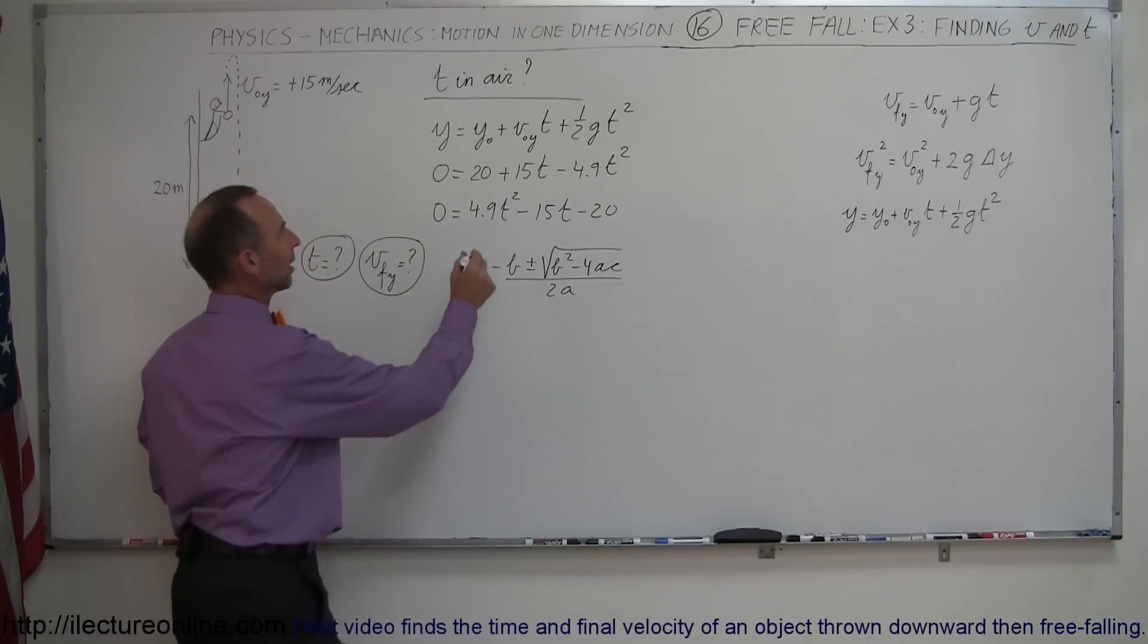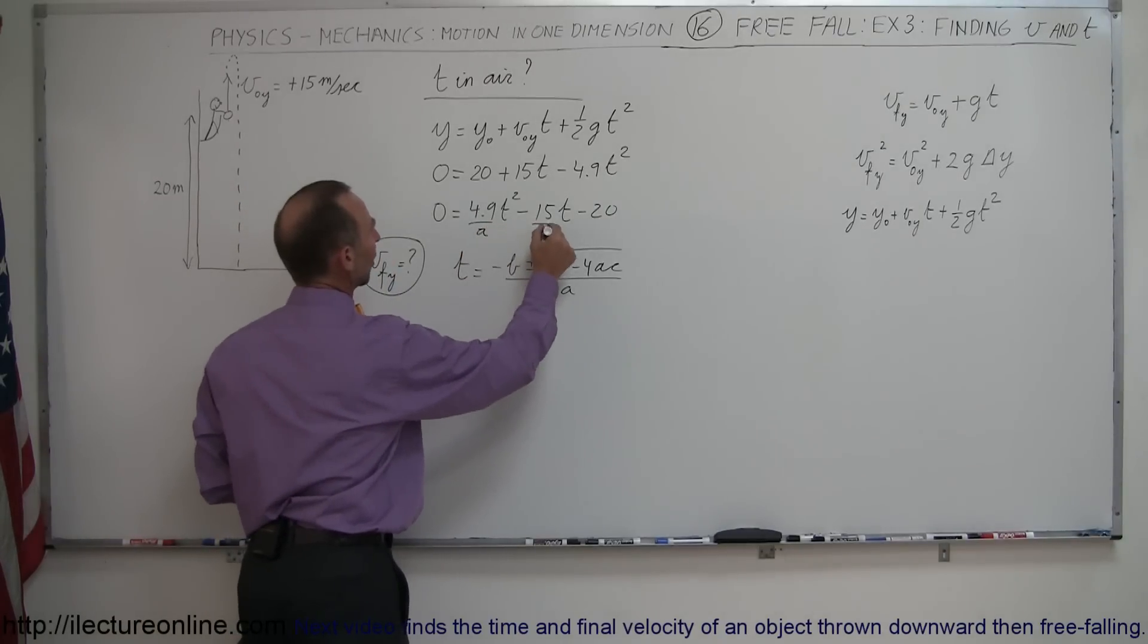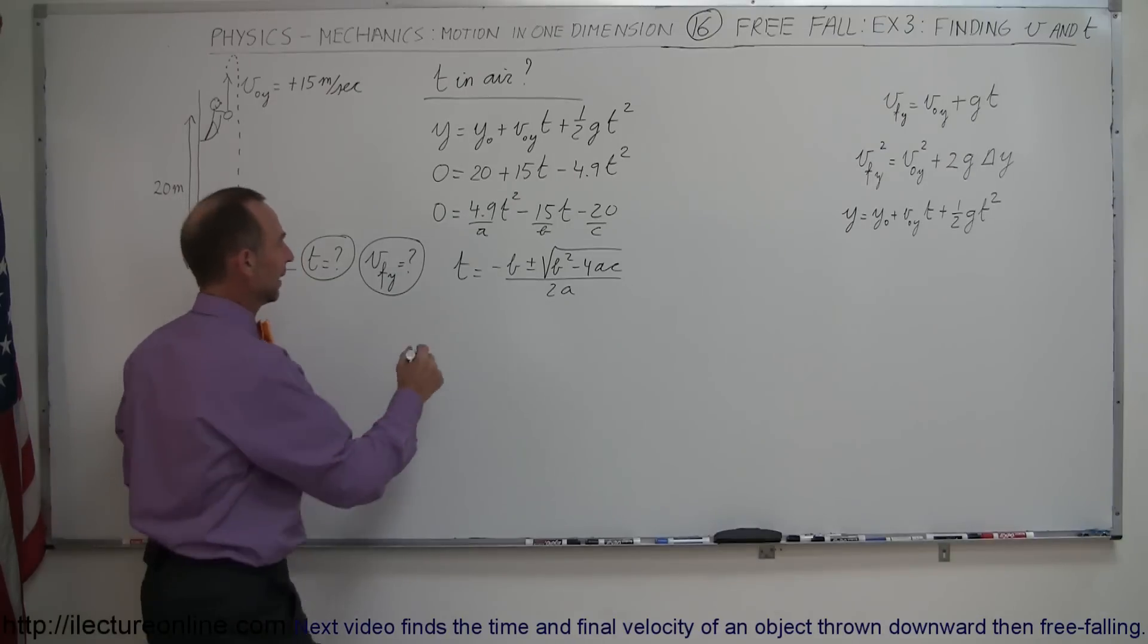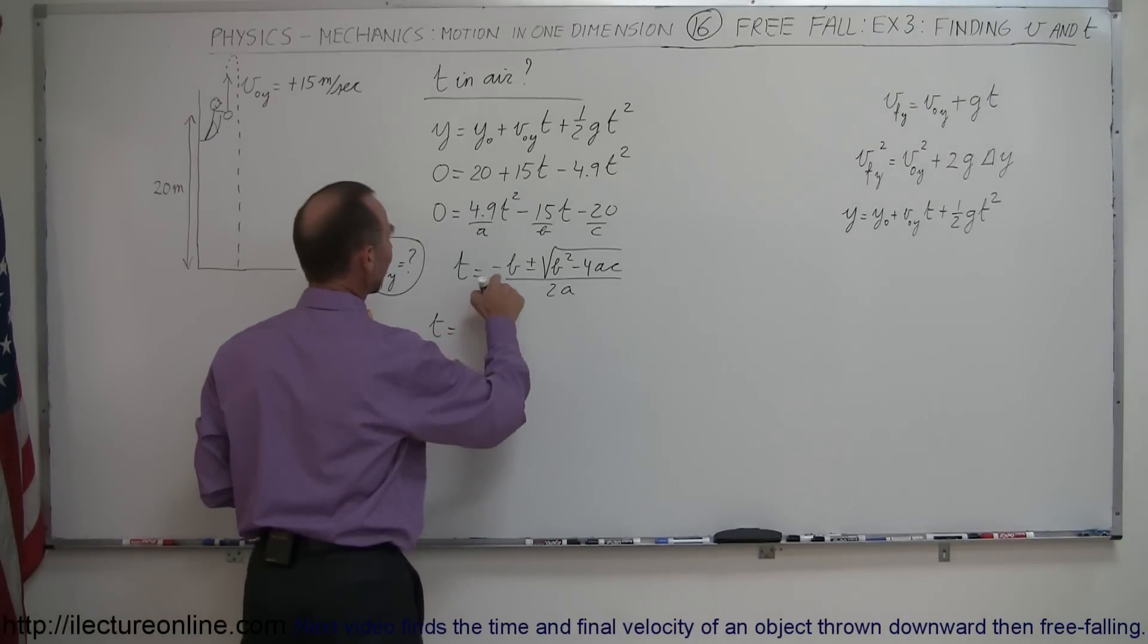For those who forgot, remember that this is our a, this here is our b, and this here is our c. So let's plug those numbers in and we get t is equal to negative b, that would be negative of a negative 15.